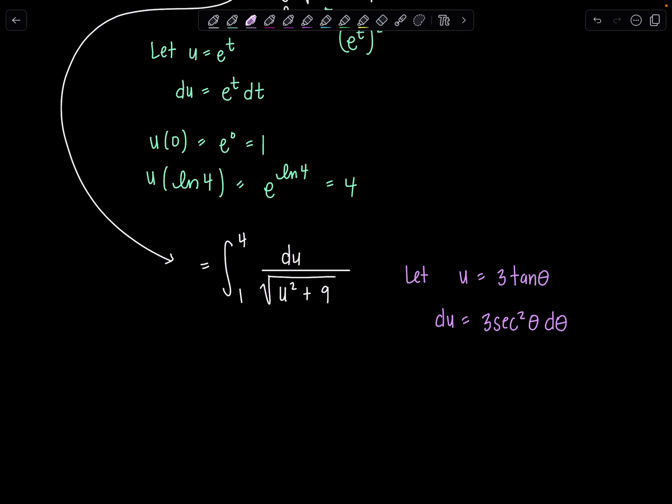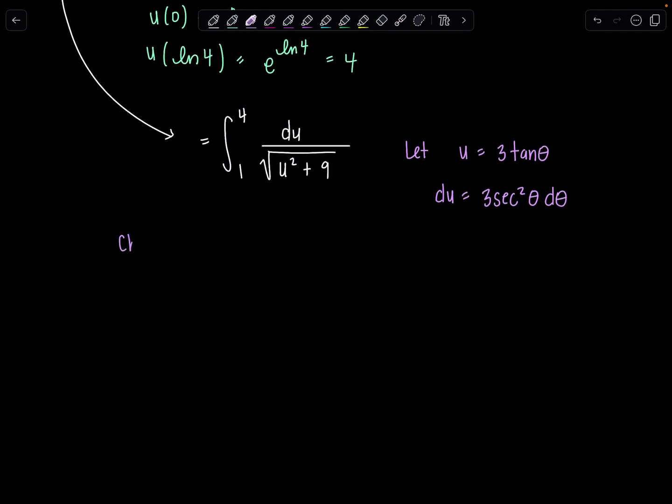Now when we do trig sub, it's a little different. But to not get jumbled up in your head, all you need to do is say these limits, 4 and 1, belong to the variable of the integral right now, u. So I'm going to substitute them in for u in my let statement. Let's go ahead and do that. So let's change our limits. And I have a whole video explaining the difference when you change limits of integration for u sub versus trig sub. If you're struggling with this, I'll link it in the description too.